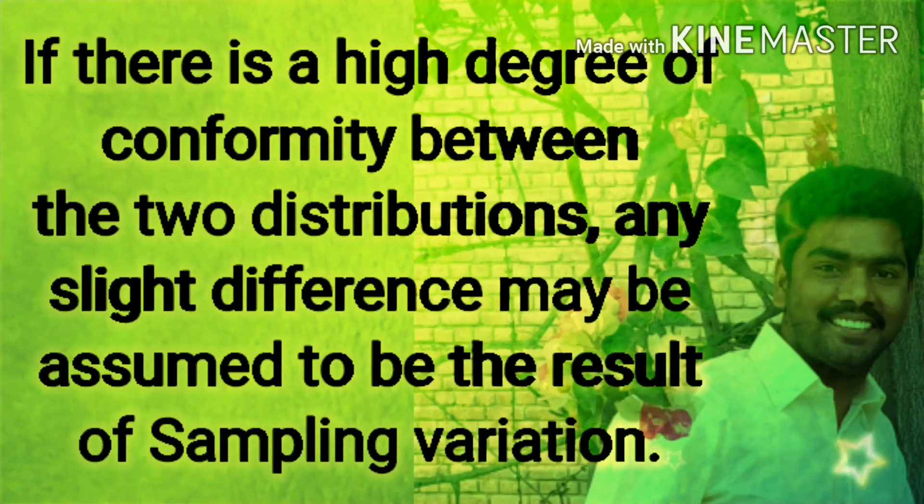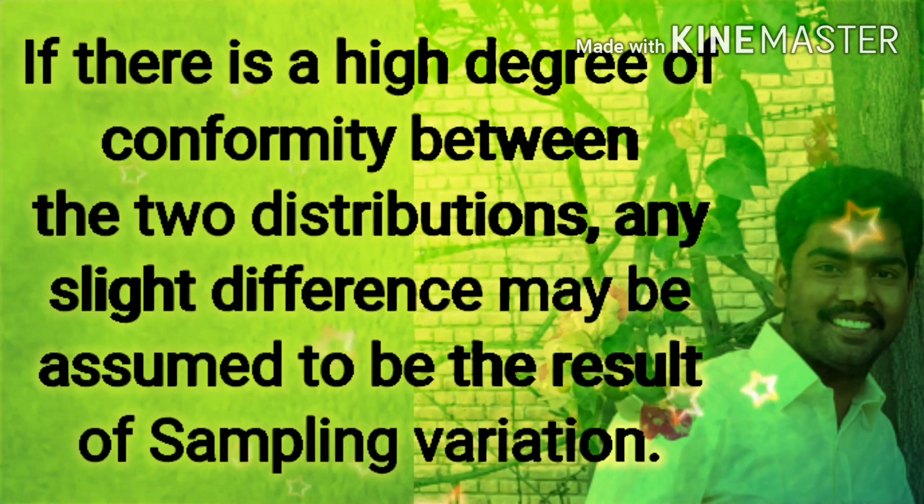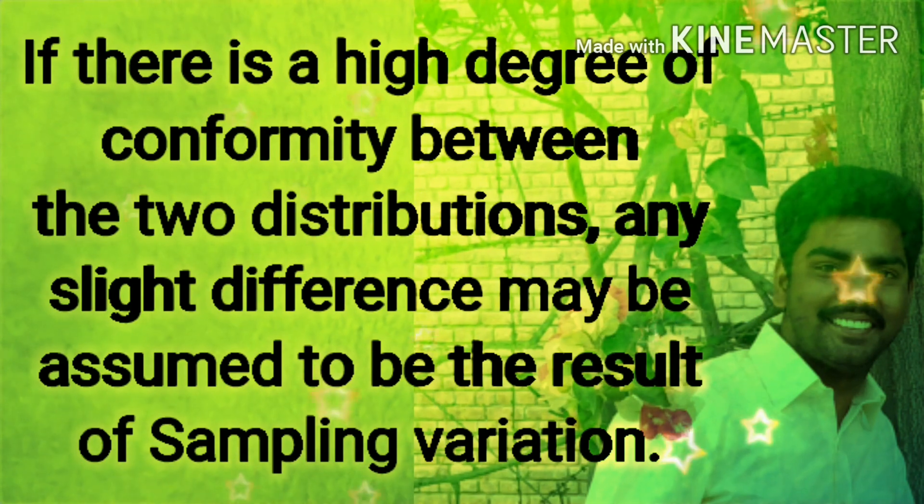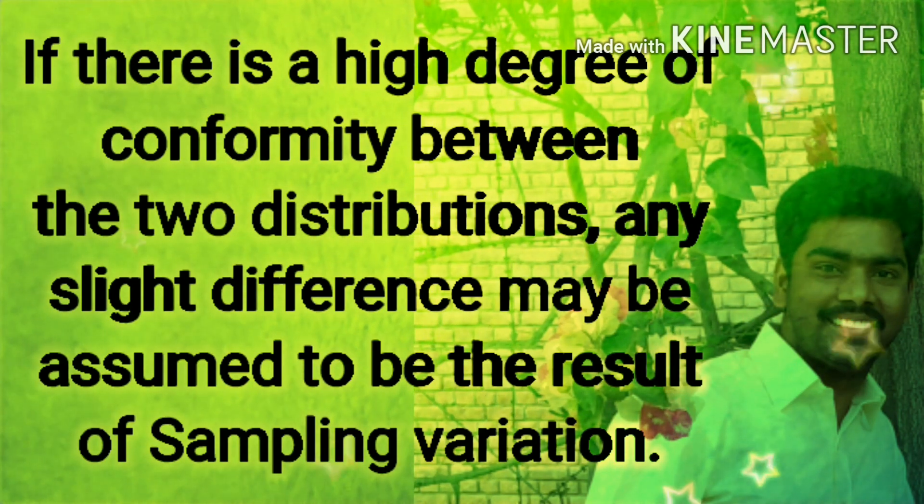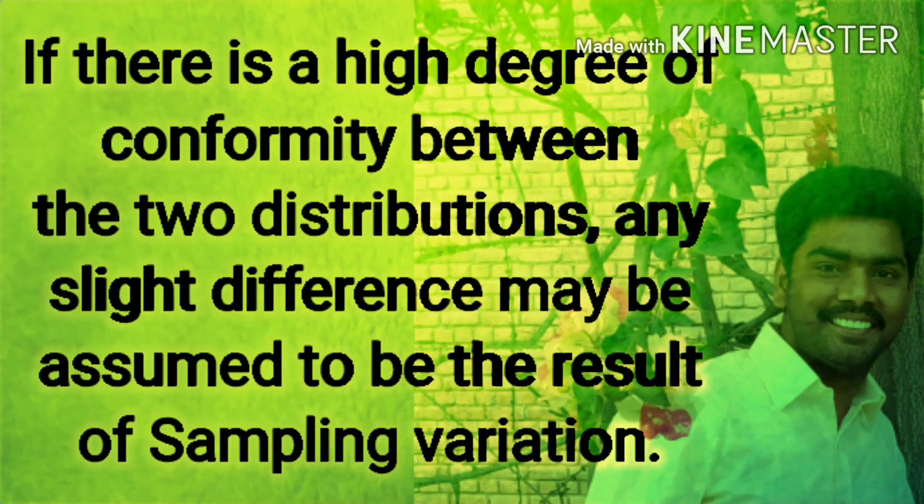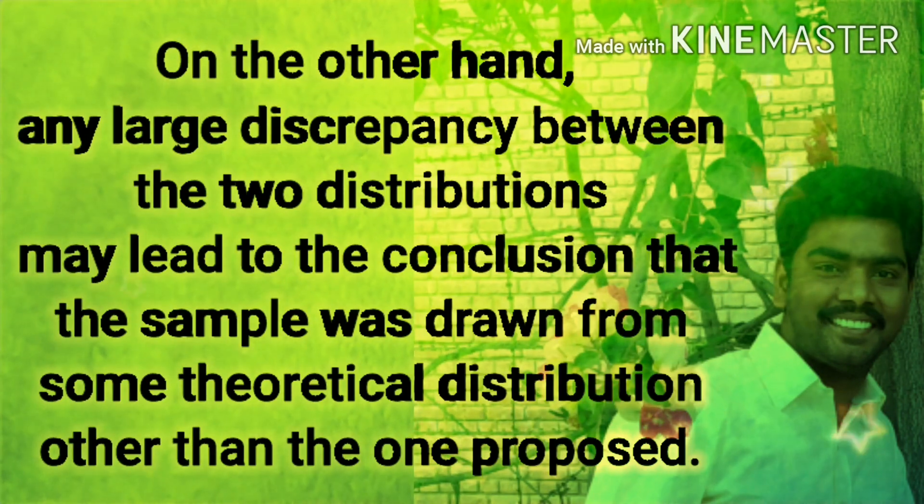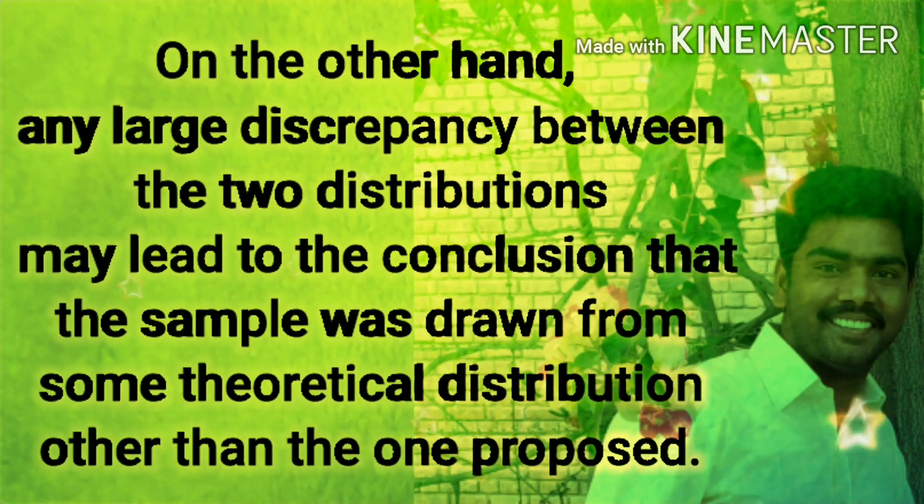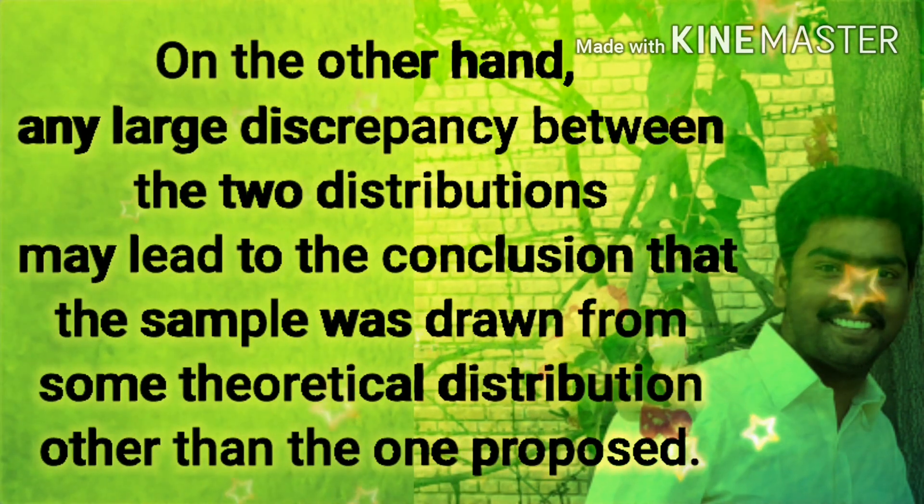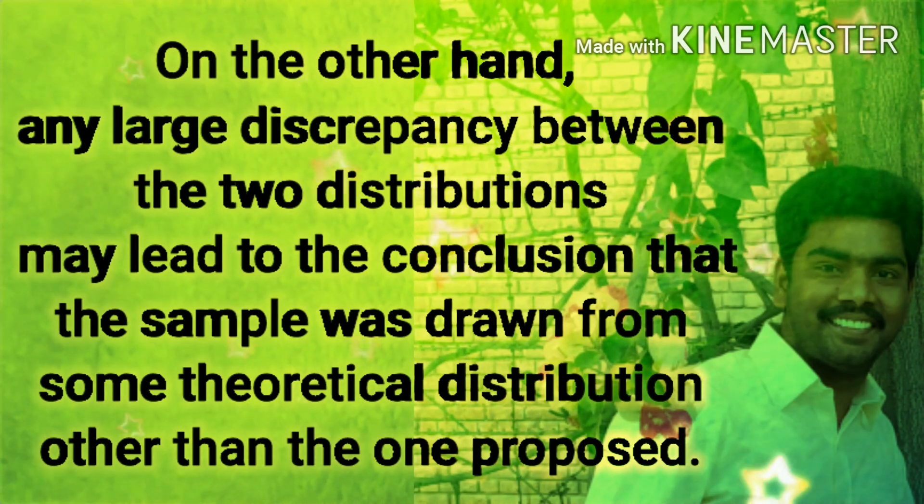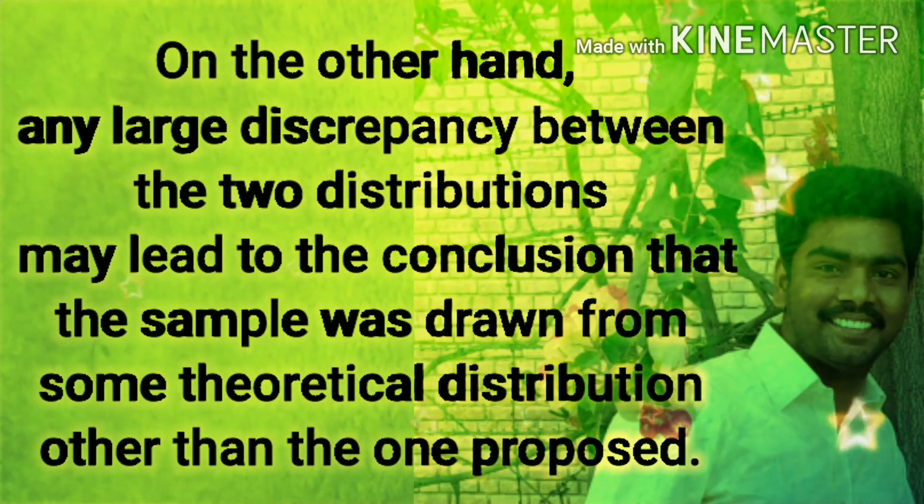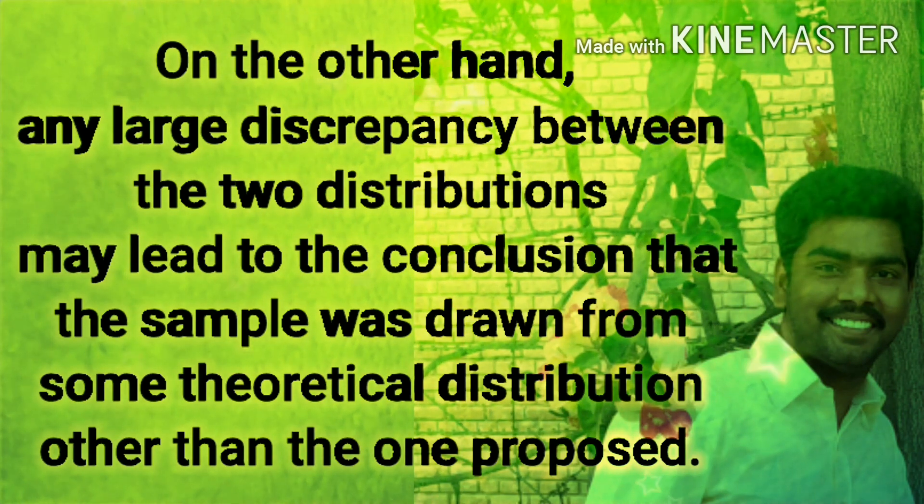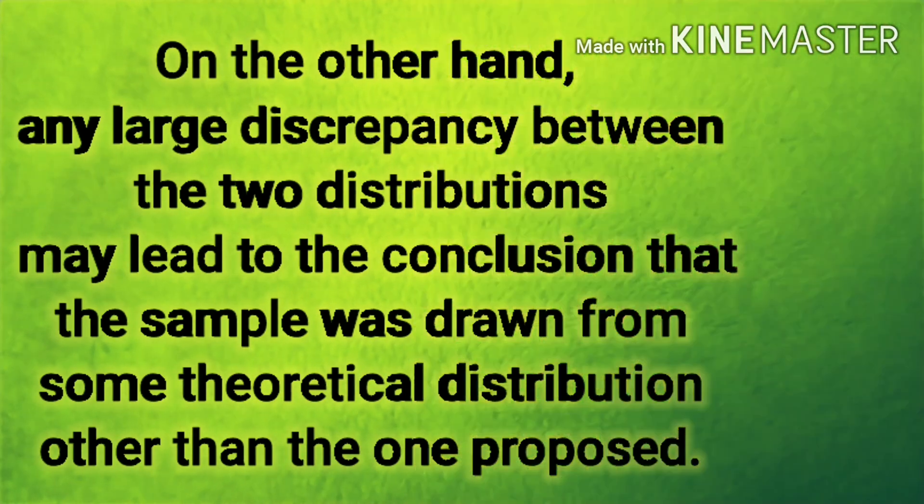If there is a high degree of conformity between the two distributions, any slight difference may be assumed to be the result of sampling variation. On the other hand, any large discrepancy between the two distributions may lead to the conclusion that the sample was drawn from some theoretical distribution other than the proposed one.